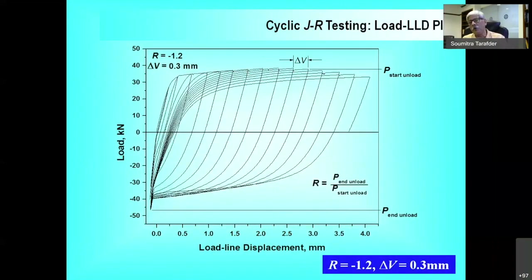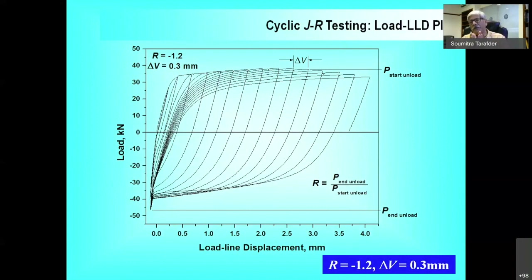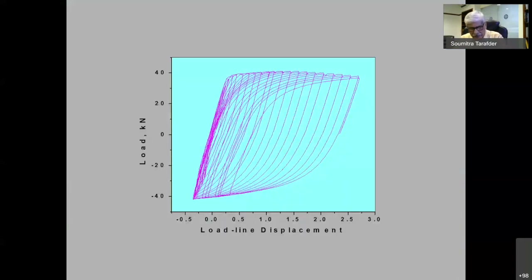This is the type of load and load line displacement plot obtained from a CT specimen for an R-value of −1.2 — one of the most severe seismic events imaginable — with periodic unloading after every 0.3 mm of tearing (ΔV = 0.3 mm). We also tested at R = −0.8. To obtain the JR curve from these tests, we identify the peaks of load in the data and obtain the envelope curve for J-integral calculation.